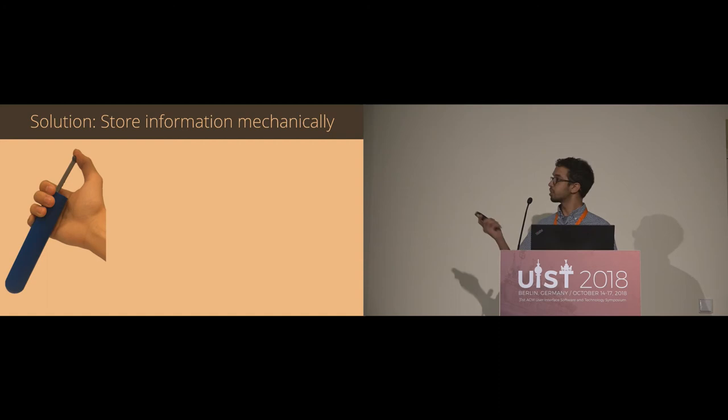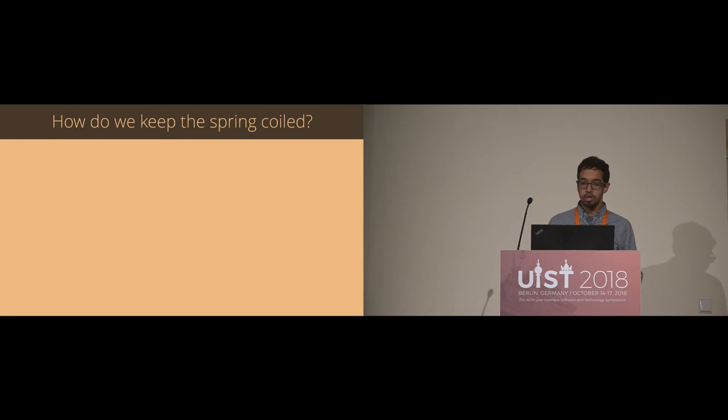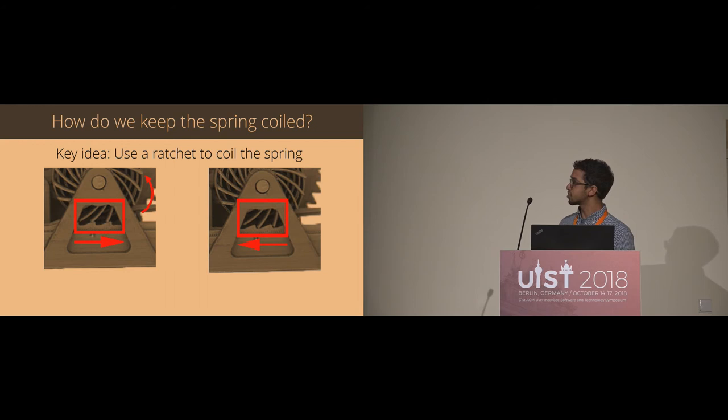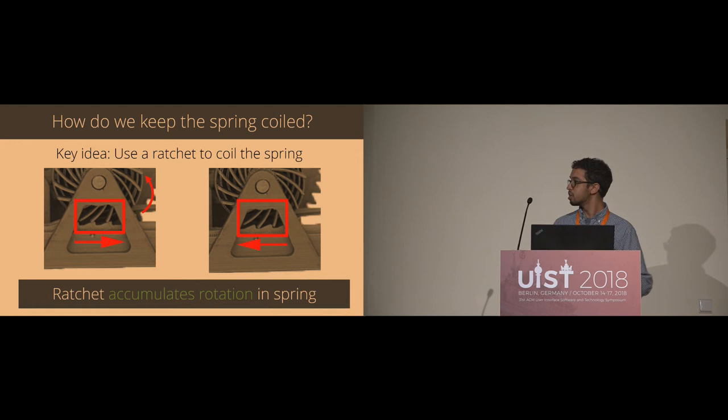Now, the way that we do this is we store information mechanically by using the force of that button press to coil up a spring. Now, if we think we can coil up a spring and it's going to store energy, but how do we keep it coiled up and do that in a controlled way? Our key idea here is to use a ratchet to coil up this spring. Now, a ratchet is a mechanism that can only turn in one direction. So on the left here, we can see that as our ratchet mechanism turns in the counterclockwise direction, it can easily slide past these teeth at the bottom. But on the opposite side, if it tries to turn the other way, it'll get stuck. So what we're doing here is our ratchet is helping us accumulate rotation in this spring. And then when you press a release mechanism, that allows the spring to rotate freely once again.